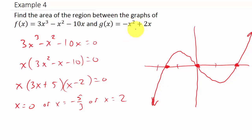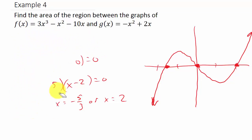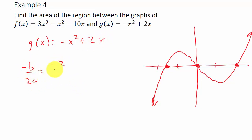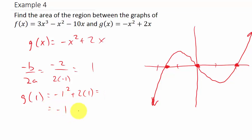Now let's look at the graph of g of x equals negative x squared plus 2x. We can find the vertex using negative b over 2a: that's negative 2 over 2 times negative 1, which equals positive 1. Then g of 1 equals negative 1 squared plus 2 times 1, which is negative 1 plus 2, equals 1. So the vertex is the point (1, 1).